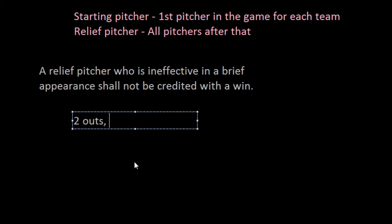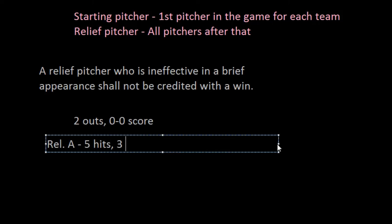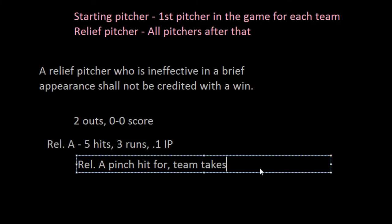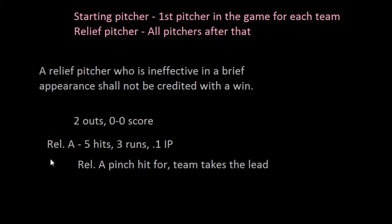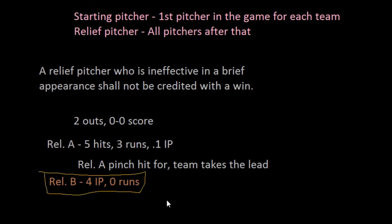For example, say a reliever — Reliever A — comes in with two outs, the game tied zero to zero, and nobody on base. Reliever A gives up five hits and three runs score before recording the final out. In the next half inning, Reliever A is pinch hit for, and his team scores four runs to take the lead. Technically Reliever A is in line for the win, but if Reliever B then pitches four more innings without giving up another run and the team wins four to three, the rules say Reliever B should get the win because Reliever A's outing was brief and ineffective.